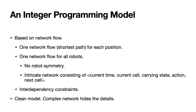Let's take a look at the integer programming model. This IP model is based on network flow, and we know that IP exploits network flow structure very well. We have one network flow for each position, and these network flows represent the pillars growing up or down in height at each position — this network flow is actually a shortest path problem. We also have one network flow for all of the robots together, not one network flow for each robot. By doing this we don't have any robot symmetries, because if each robot was assigned a particular index or number you would have symmetries. So using one network flow for all robots avoids these symmetries.